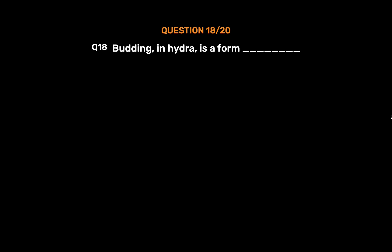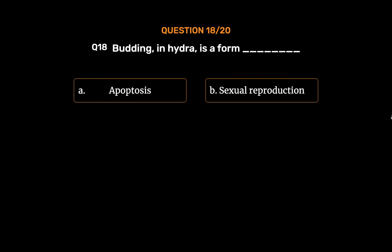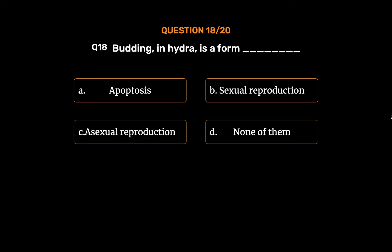Question No. 18: Budding in hydra is a form of. Option A: Apoptosis. Option B: Sexual reproduction. Option C: Asexual reproduction. Option D: None of them. The correct answer is Option C: Asexual reproduction.